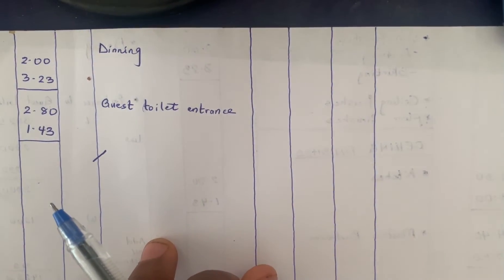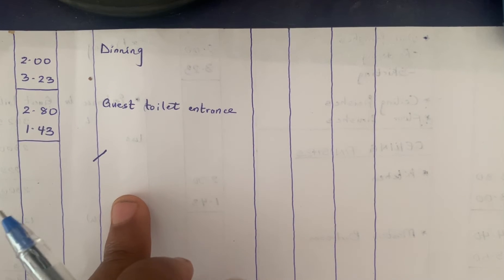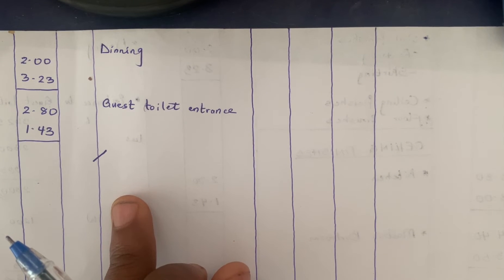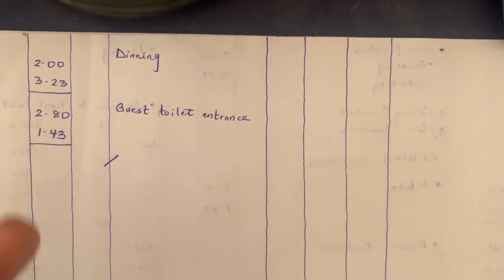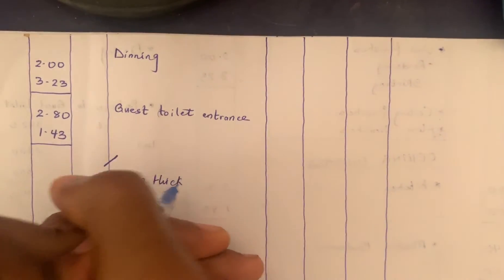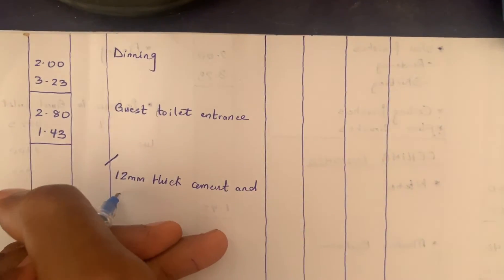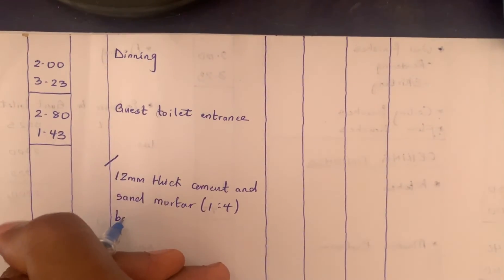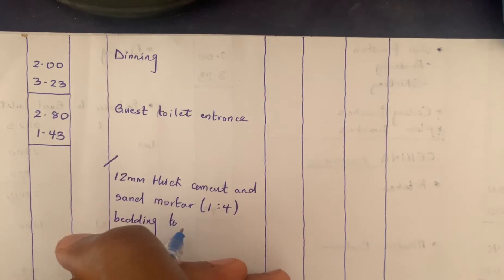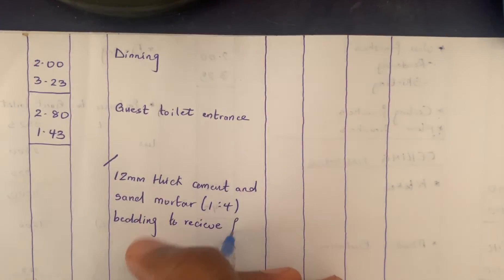When describing, I'm going to assume that the kind of finishing used would be tiles — specifically 800 by 800 mm marble tiles. Now remember, when you are doing tiling work on a ground surface, you have to do what we call bedding. That's the cement mortar that would be placed to receive the tiling. So I'll describe: 12 mm thick cement and sand mortar, 1:4 mix, for bedding to receive floor tiles.